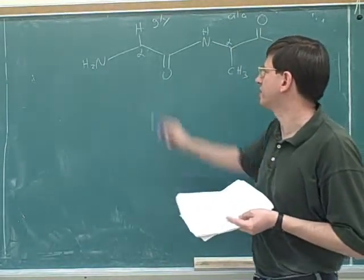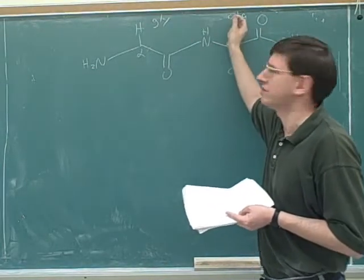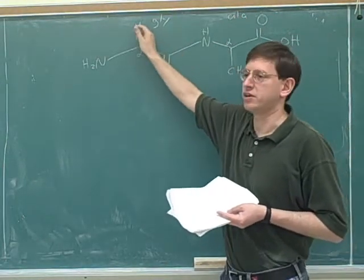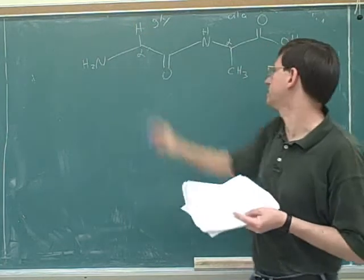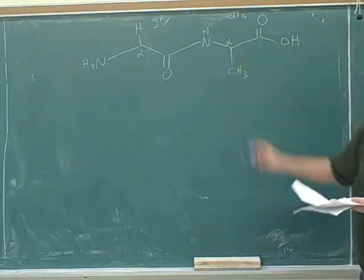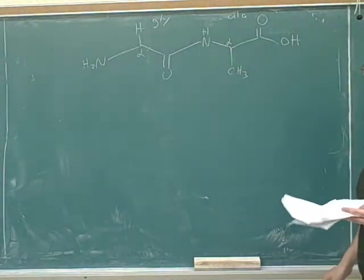If you look them up in the table, you'll see that this is glycine and this is alanine. Glycine has a single hydrogen as its side chain, and alanine has a methyl group as its side chain.